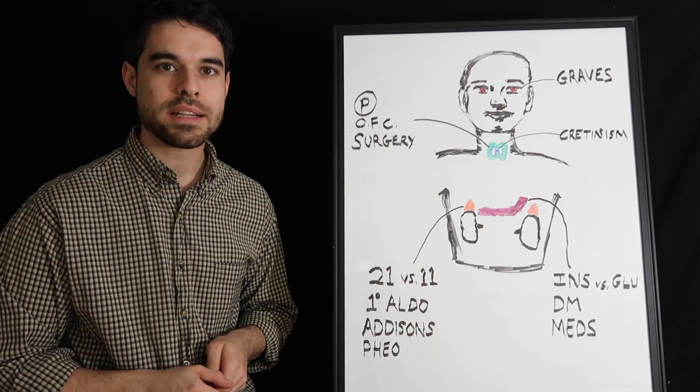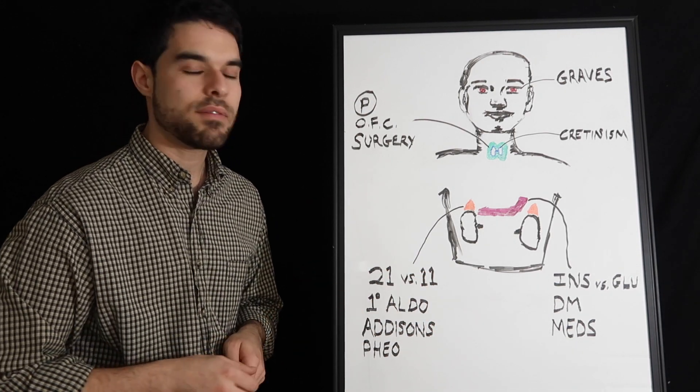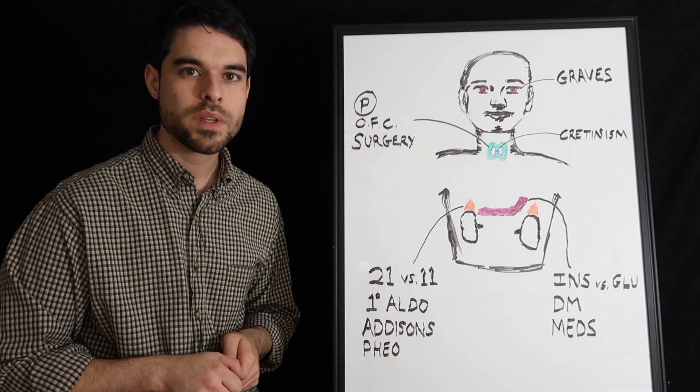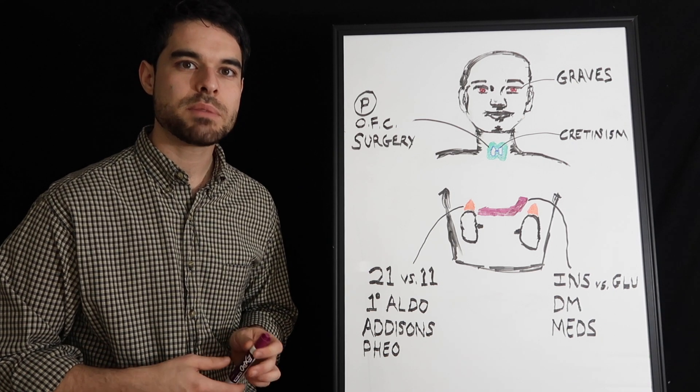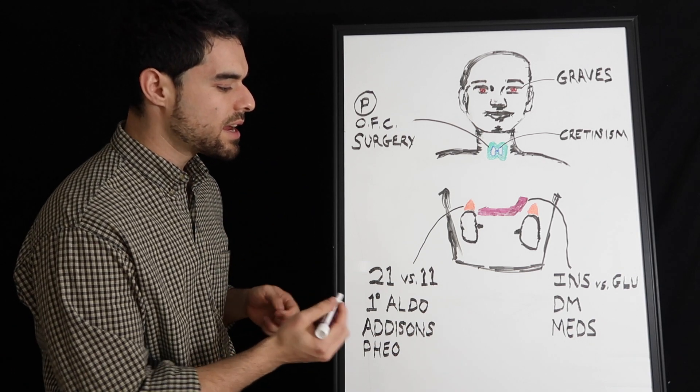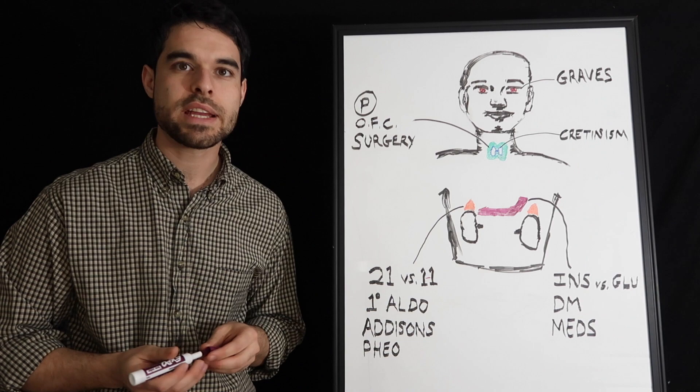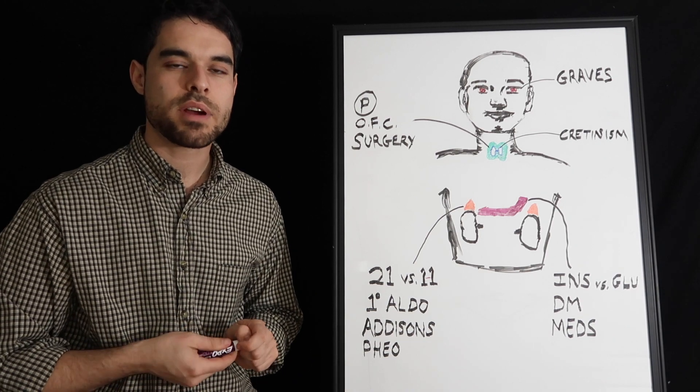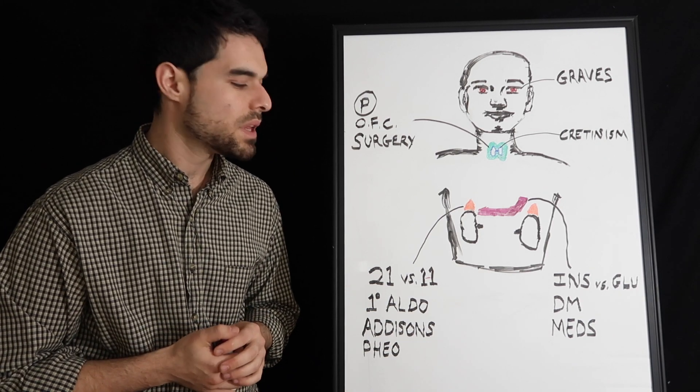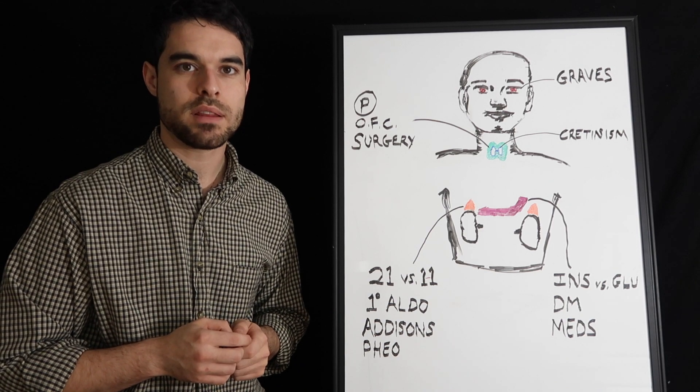Moving on to the adrenal glands, 21 versus 11 hydroxylase deficiency. It's important to know that the 11 hydroxylase deficiency presents with hypertension. I remember that with the little line between the two ones looks like an H. So high blood pressure, hypertension is with 11. Both of them present with virilization at puberty though.